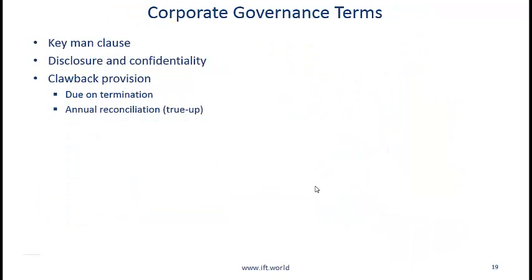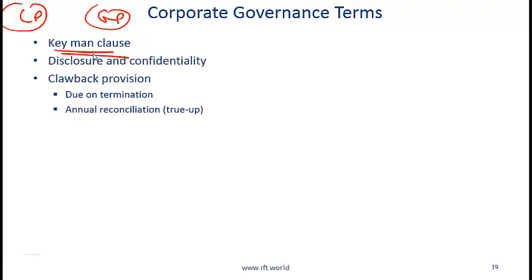Next point: corporate governance terms between the LP and GP. The key man clause says that if a certain key person in the private equity fund — the person based on whom you made the investment — leaves, there must be certain provisions. For example, investments will not be made until another key person joins the firm. This helps protect the LP. Regarding disclosure and confidentiality: since these are private investments, disclosure requirements are very low, and if you as an LP have invested, the GP will generally keep that information confidential.